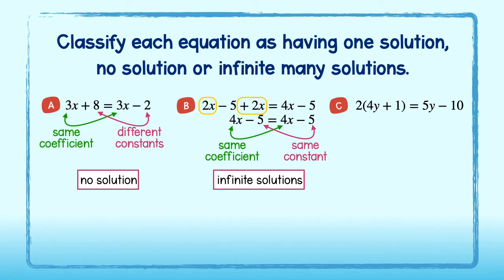And lastly, in problem C, I will simplify by using the distributive property. 2 times 4y is equal to 8y, and 2 times 1 is equal to 2. I will copy down the rest of the problem. I now see that the expressions on either side have different coefficients, and therefore, they only have one solution. Great job!